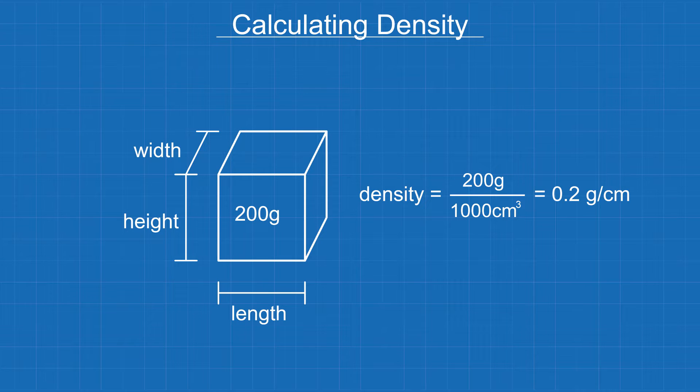Imagine this was a block of wood. If it measured 10 centimeters by 10 centimeters by 10 centimeters and it weighed 200 grams, its density would be 0.2 grams per centimeter cubed.